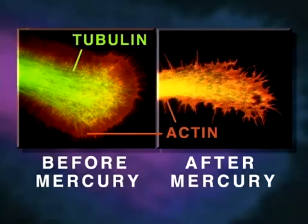Shown here is a neurite growth cone stained specifically for tubulin and actin, before and after mercury exposure. Note that the mercury has caused disintegration of tubulin microtubule structure.